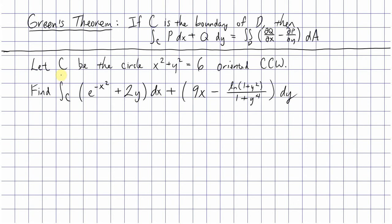And the example we'll look at is the line integral over a circle of radius √6 of e^(-x²) + 2y dx, so I hope you can see that this has to be our p.